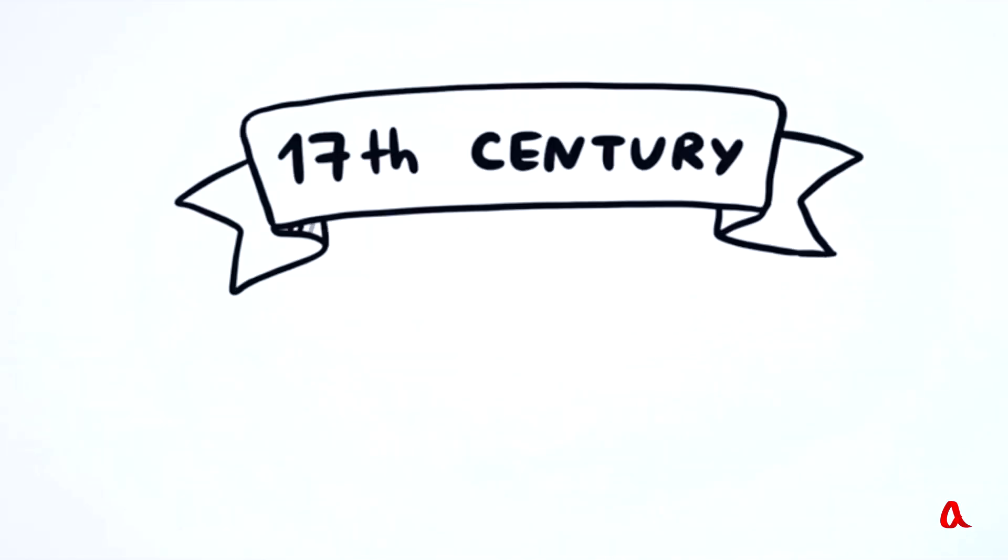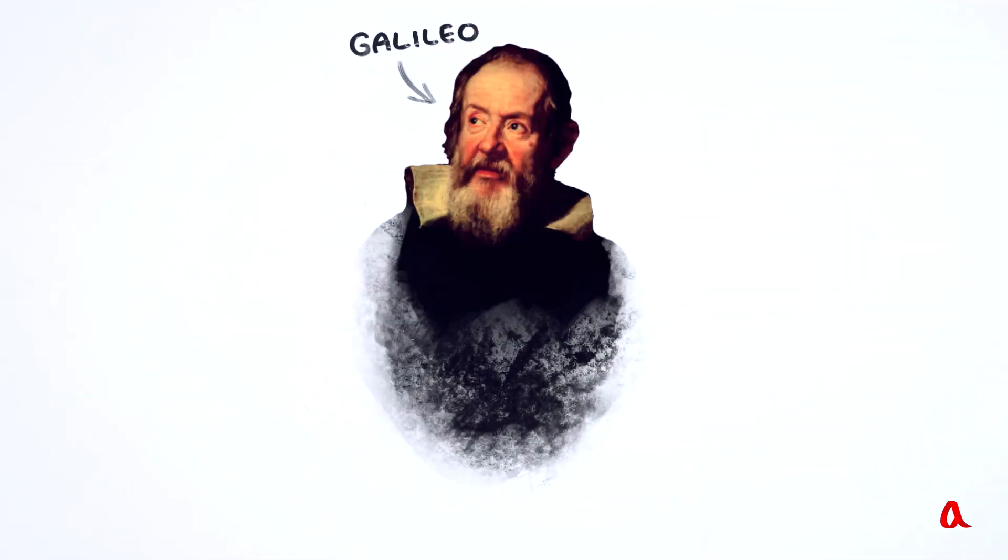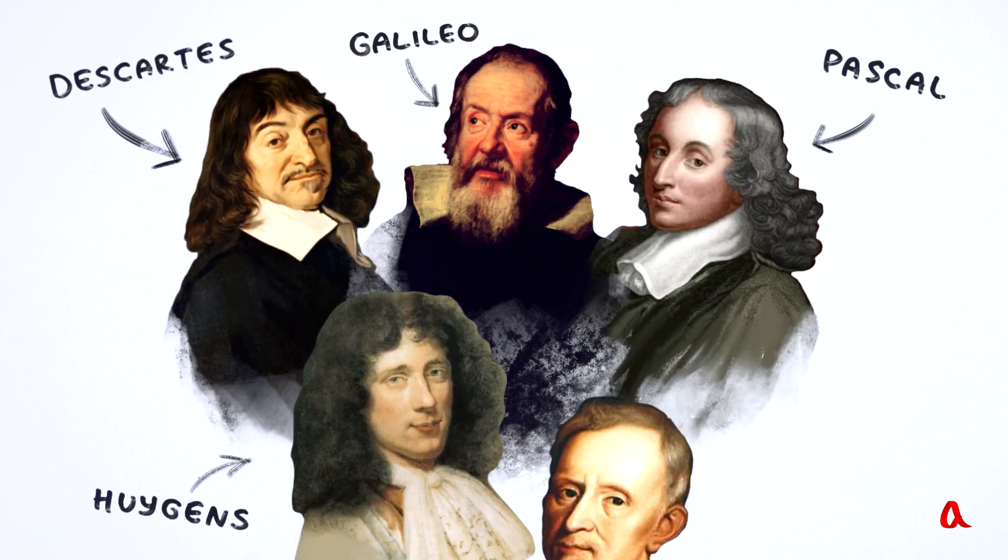The development of physics in the 17th century began with mechanics. Its pioneer was Galileo, followed by Descartes, Pascal, Huygens, Hooke, and many others.